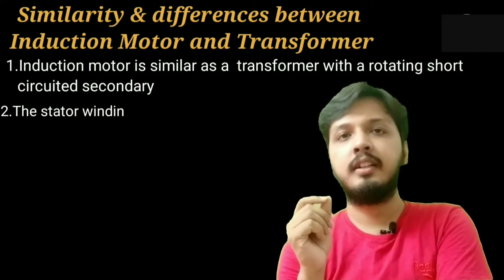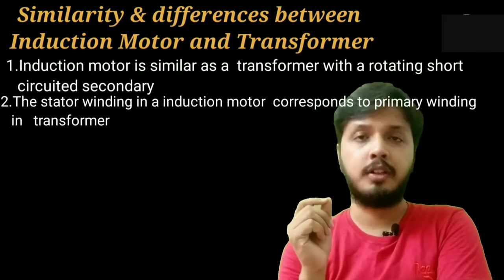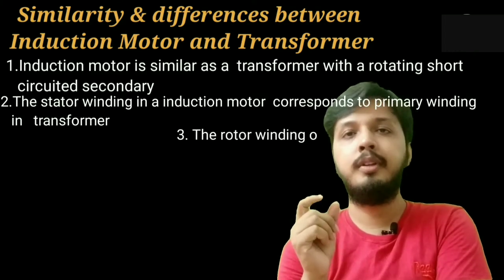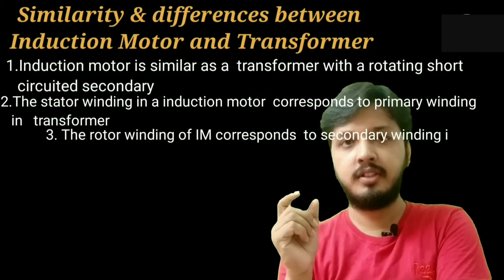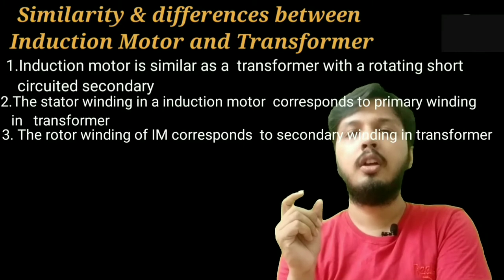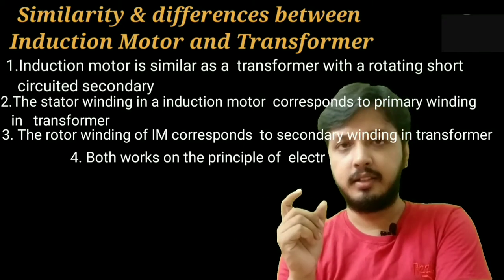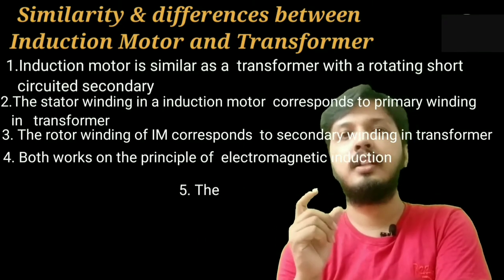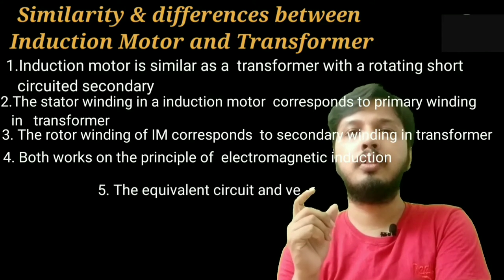The stator winding in an induction motor corresponds to the primary winding of the transformer. The rotor winding of induction motor corresponds to the secondary winding in a transformer. Both work on the principle of electromagnetic induction. The equivalent circuit and vector diagram of both are same.